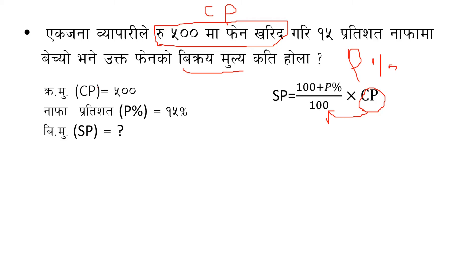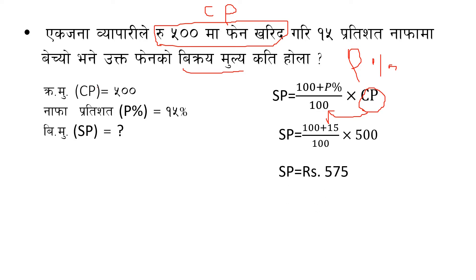You can use this formula directly. SP means (100 plus profit percent) divided by 100, multiplied by CP. Because CP means the base: (100 plus profit percent) divided by 100 into CP. So CP means 100 plus profit, and profit means plus cost price. Plus cost price means you can buy the price of $550.